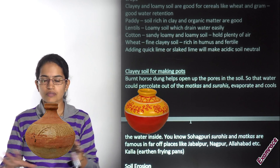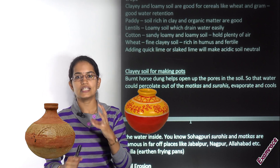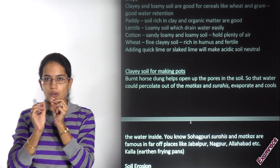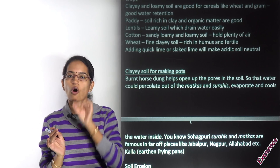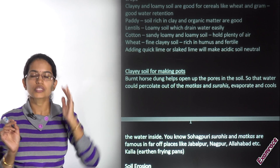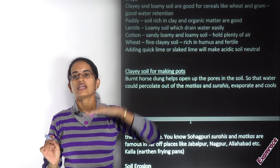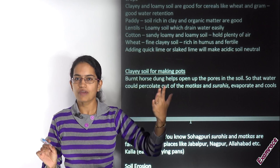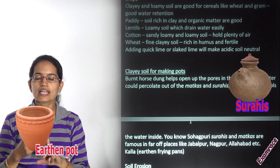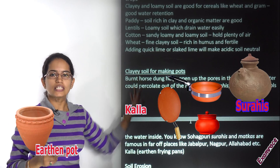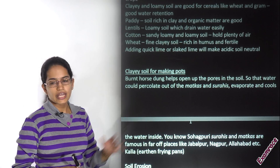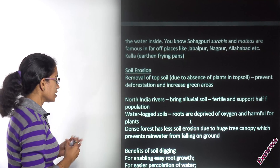An interesting example is the Sohaagpuri pot, famous throughout Madhya Pradesh and Uttar Pradesh. These pots are specially designed to keep water very cool. To loosen the soil particles, burnt horse dung is mixed into the soil, causing the soil particles to become loose. Water evaporates more quickly, and the more the evaporation of water, the cooler the container. Surahis, earthen pots, and kalas are made using this Sohaagpuri technique.